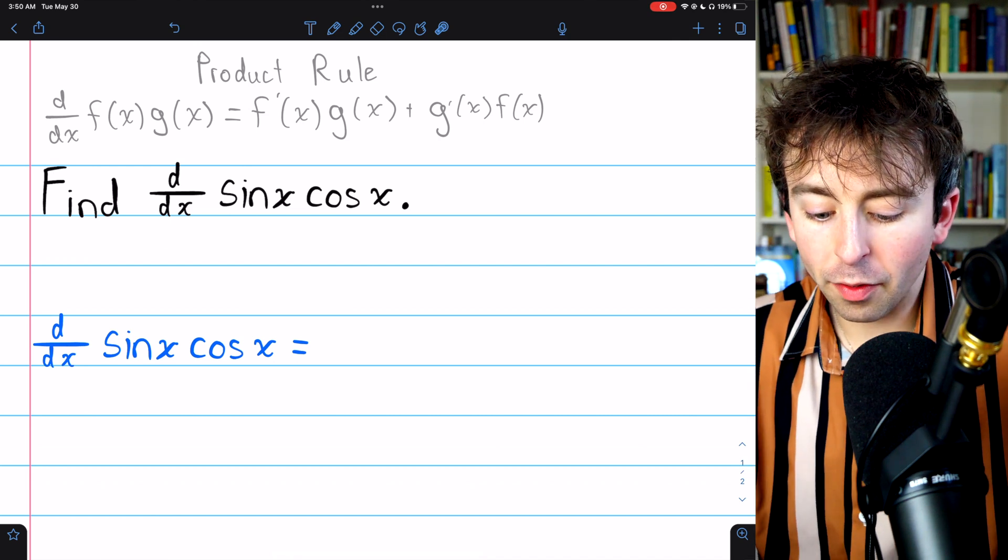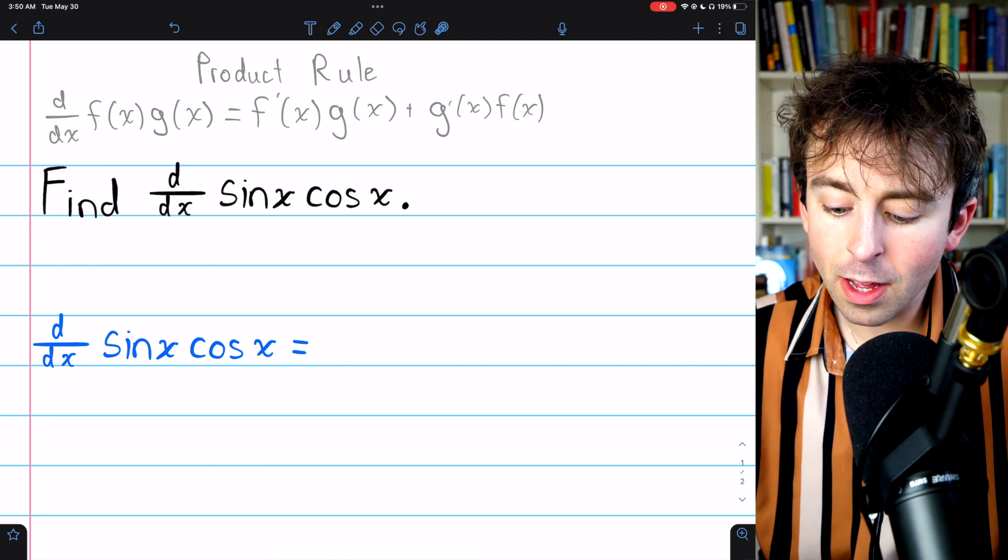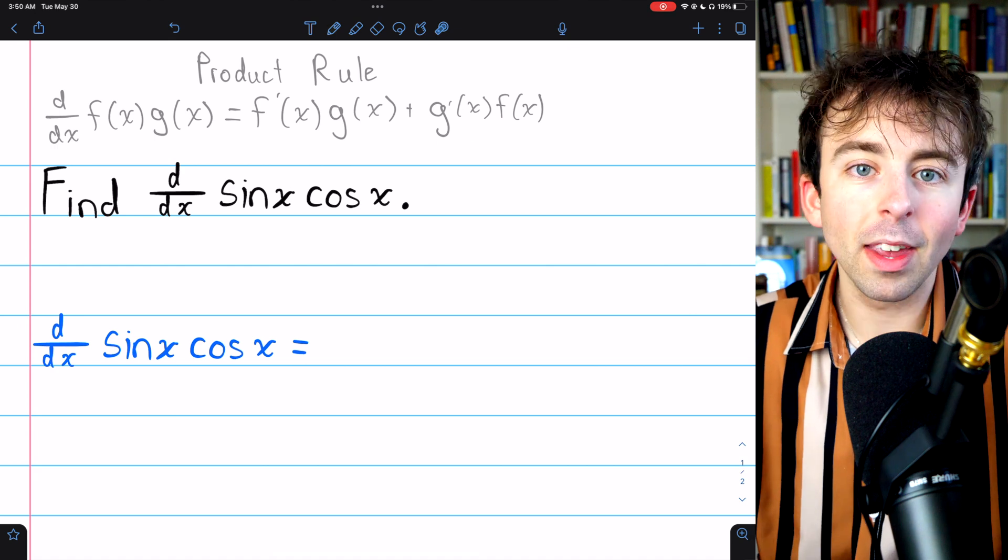The derivative of a product of functions, f of x times g of x, is f prime times g plus g prime times f.